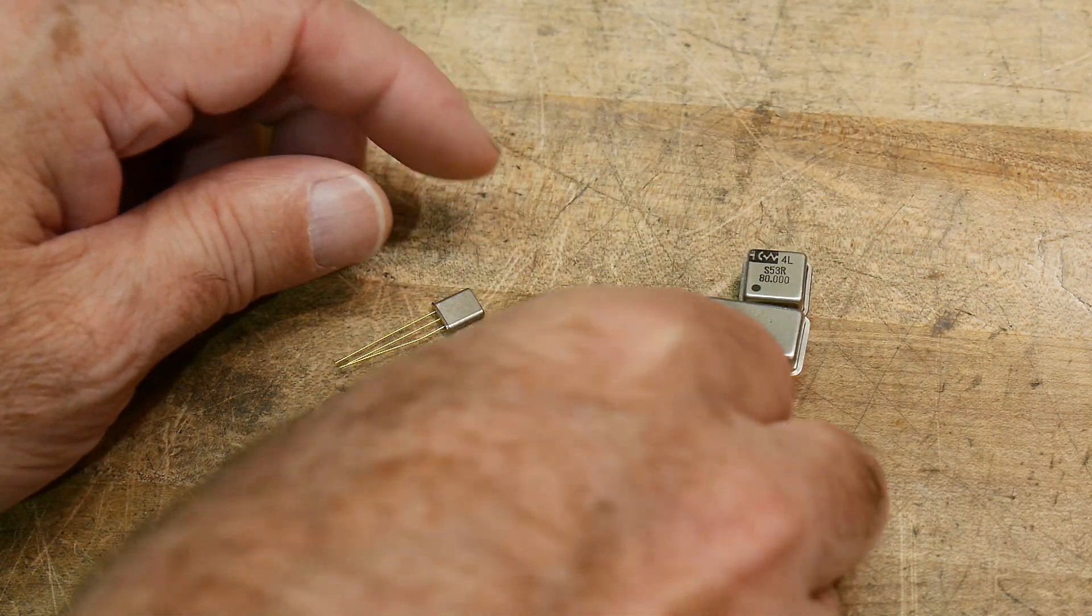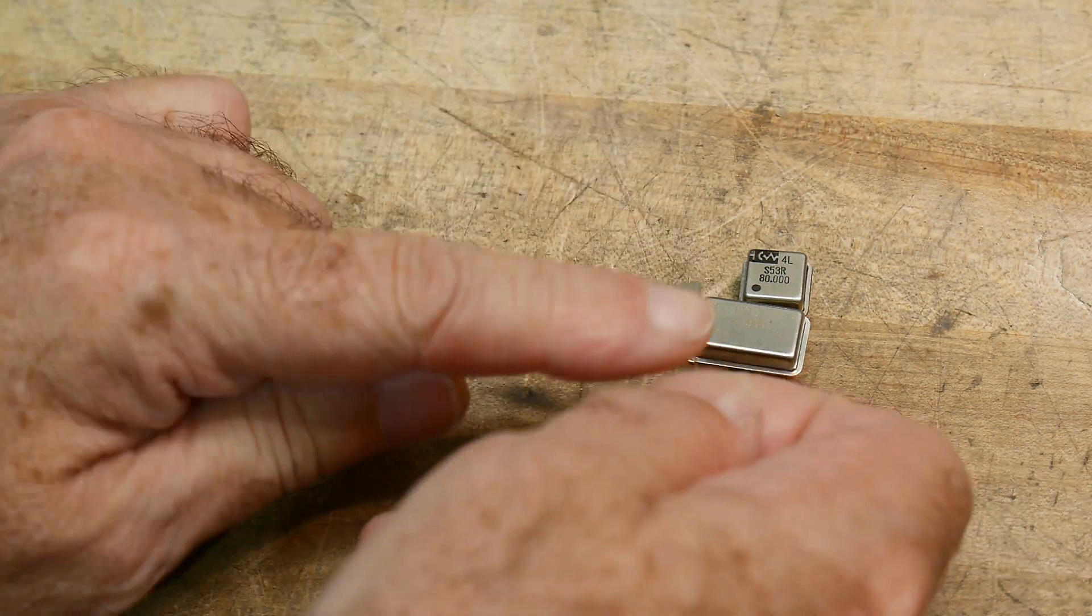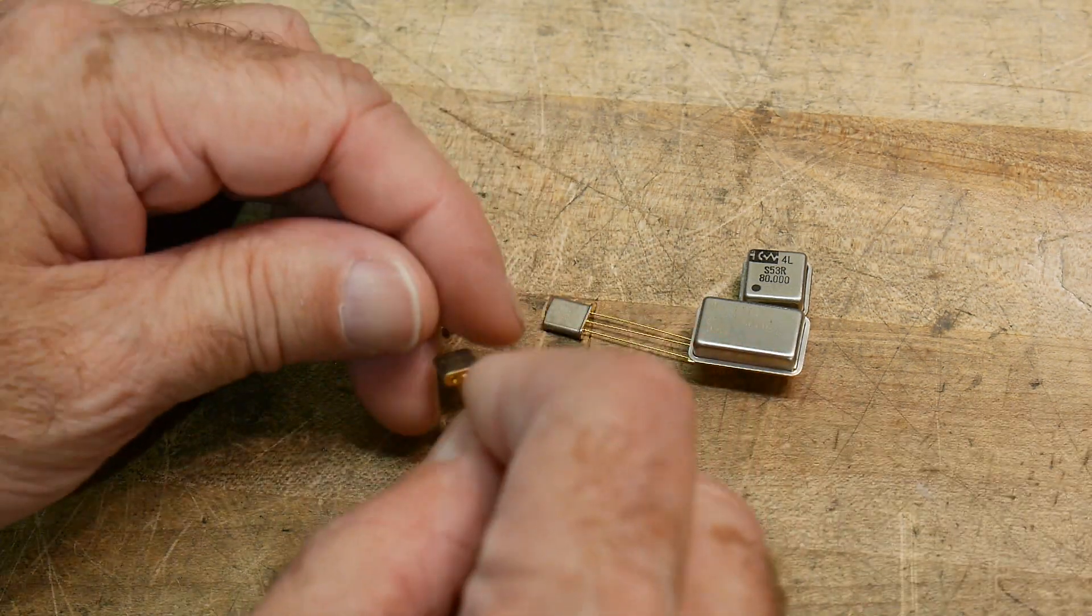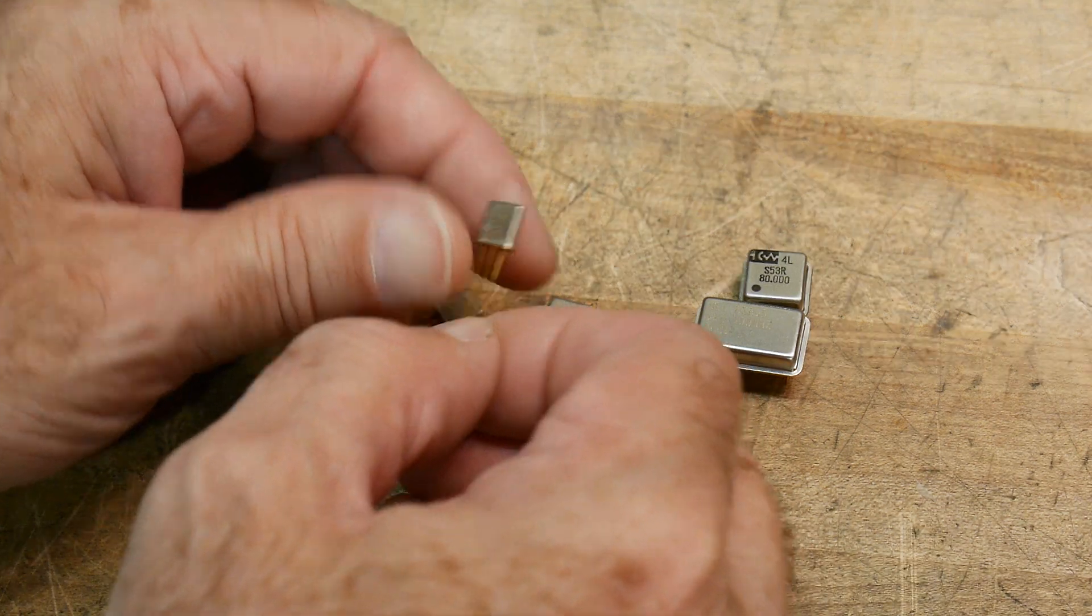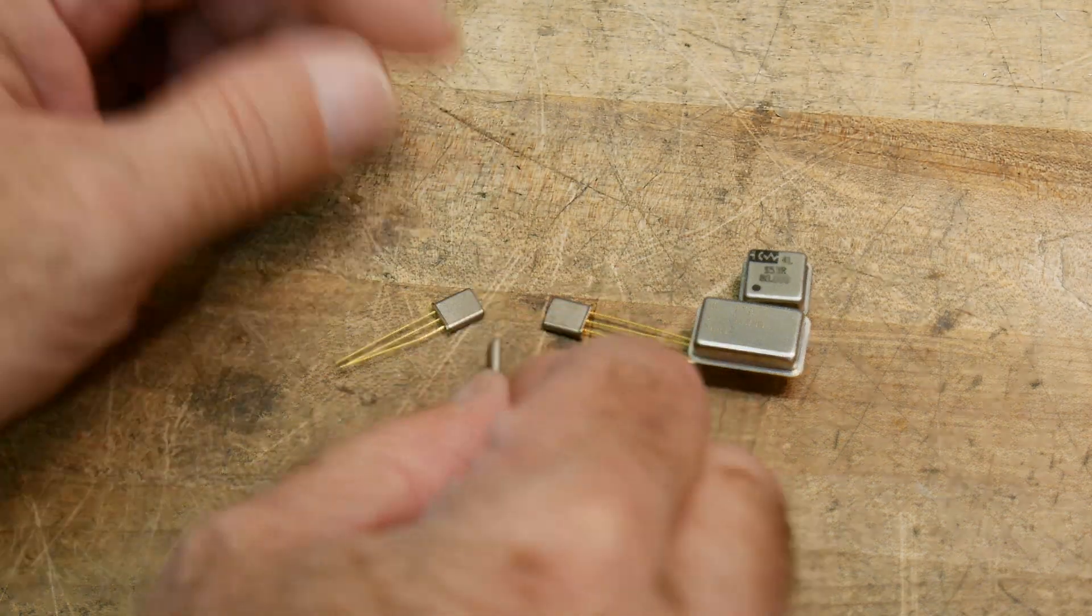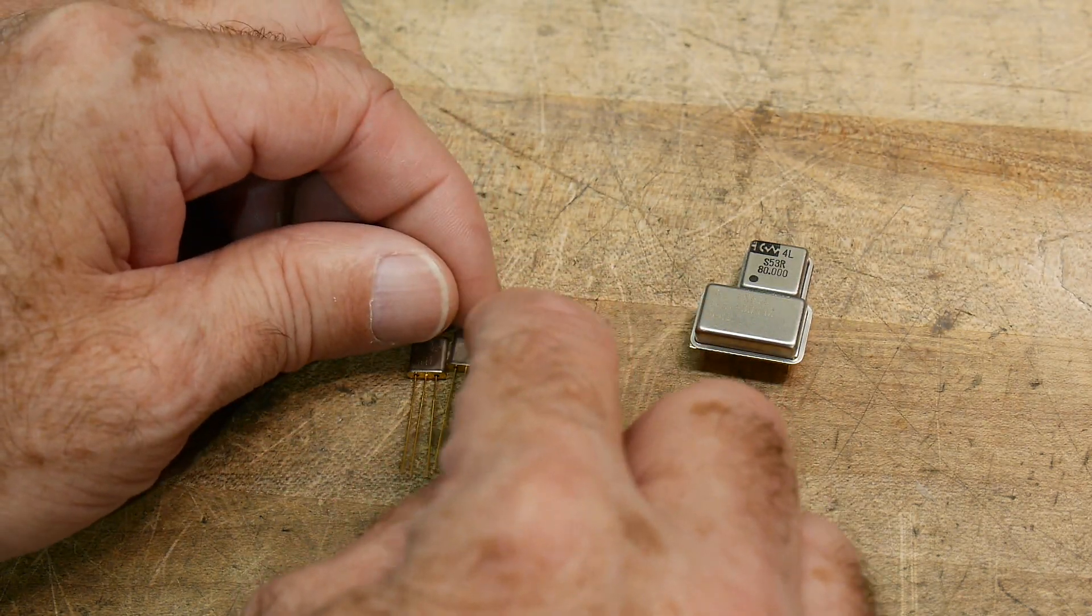And then these guys are IF filters. They're three legs, they're not crystals, they're IF filters. And they're 70 megahertz. So I don't know what kind of specs they have, but they were only 50 cents. So I got three of those just for fun and maybe they'll be a good addition to my collection as well.